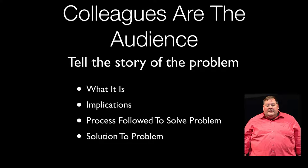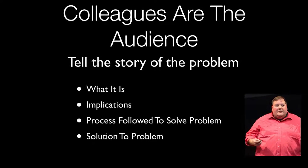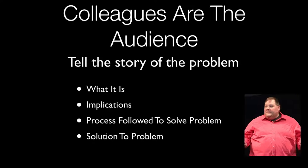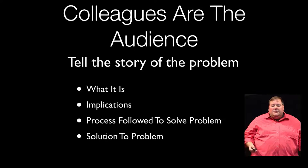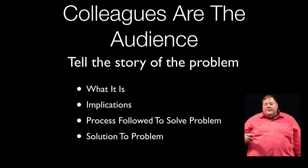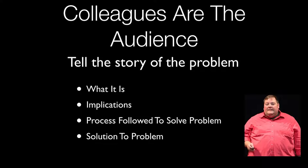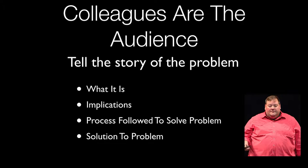The documentation you write for yourself should have sufficient detail that you can easily turn it into documentation for others. When writing documentation for your colleagues, I think you want to tell them the story of the problem: how the problem got discovered, the implications of the problem, the process you followed when solving it, and if appropriate, include where you initially took an incorrect approach and how you recognized and fixed that. And last, how you solved the problem. Add all the details you can, including commenting code if a script is involved.